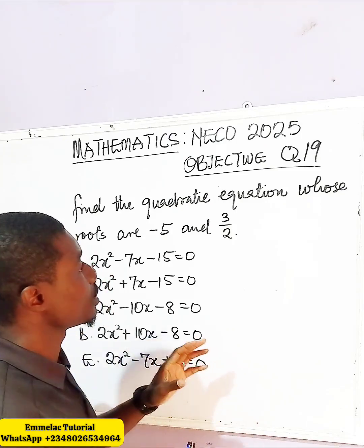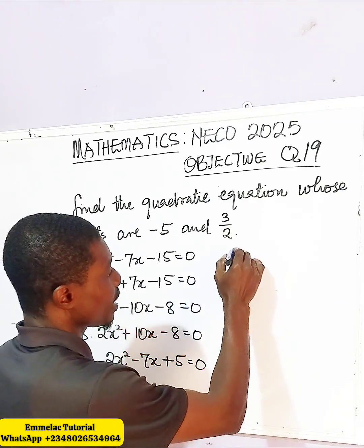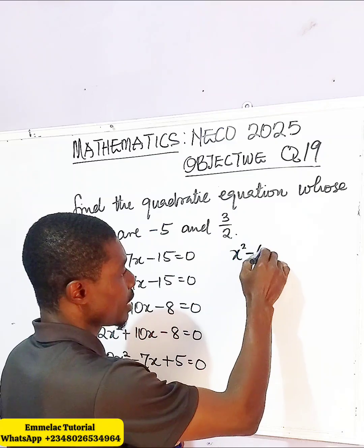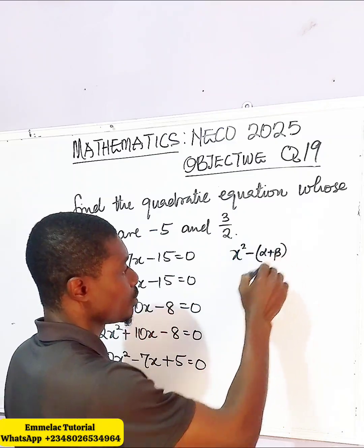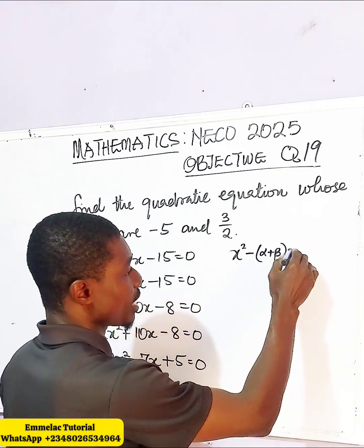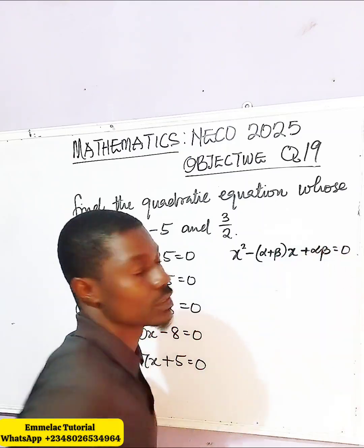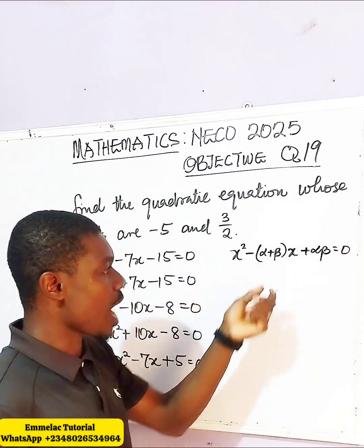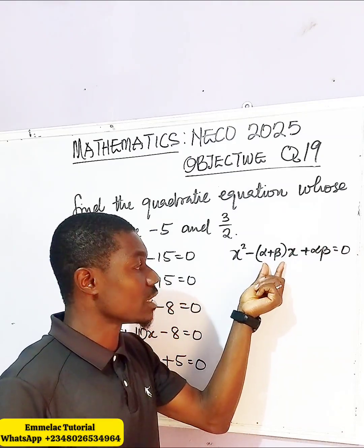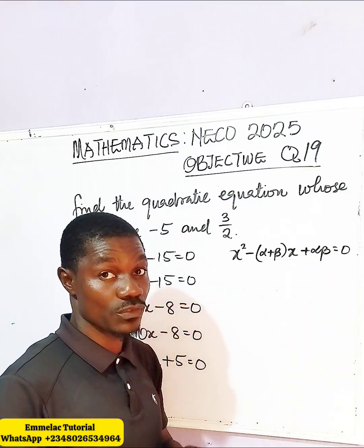For every quadratic equation, it has this pattern: x raised to the power of 2, minus (alpha plus beta) — which represents the roots — times x, plus alpha times beta equals 0. At this point we have the sum, and at this point we have the product of the roots.